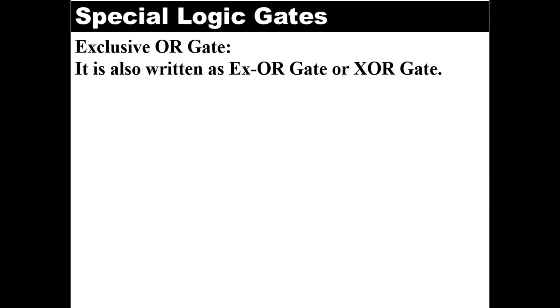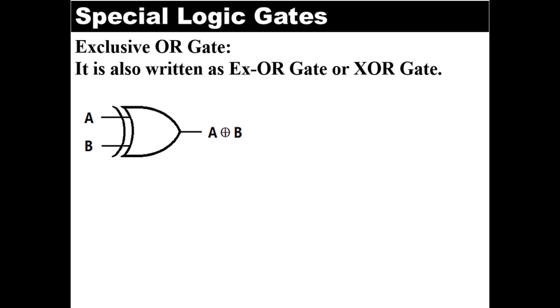XOR gate is also known as exclusive OR gate, written as XOR or XOR gate. It is actually a digital gate that gives a true or high or a 1 value to the output when the inputs have different values. That is, if its input values are not the same then its output will be 1 or high. So for a two-input exclusive OR gate, the output will be 1 or high if only one input to its gate is 1 or high.